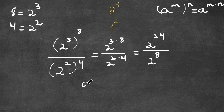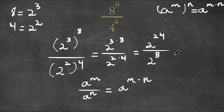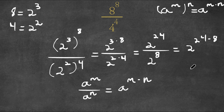Now, if we have something in the form a to the power of m over a to the power of n, this is equal to a to the power of m minus n. So in this case, we can think of 2 as a, m as 24, and n as 8. So this would equal 2 to the power of 24 minus 8, and 24 minus 8 is 16.